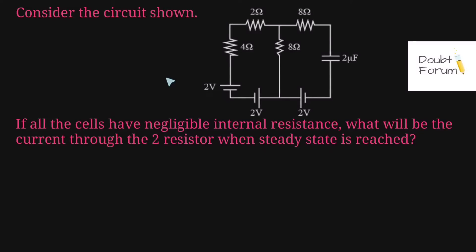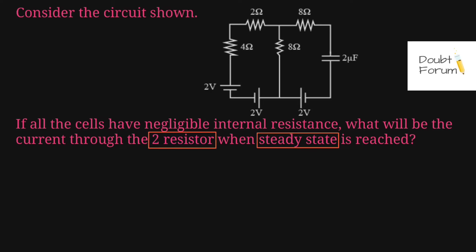Hello everybody, welcome to Doubt Forum. In this question, this circuit is given, and it is mentioned: if all the cells have negligible internal resistance, what will be the current through the 2 ohm resistor when the steady state is achieved? So we have to find out the current flowing through this 2 ohm resistor once the steady state is achieved.